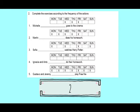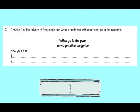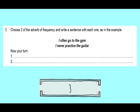In part two, you have to complete the exercises according to the frequency of the action — van a completar las oraciones de acuerdo a la frecuencia de las acciones. For example, we have Michelle going out three times a week — what adverb of frequency fits? Then there's Martín with one, two, three, four, five times a week — cinco veces a la semana — doing his homework. What adverb of frequency applies? You do the same for each one.